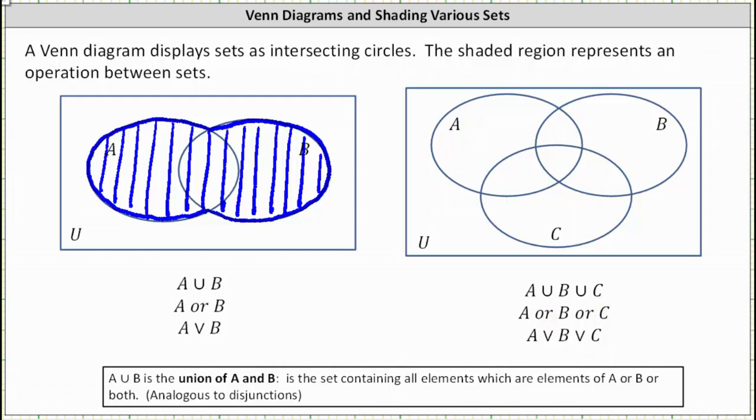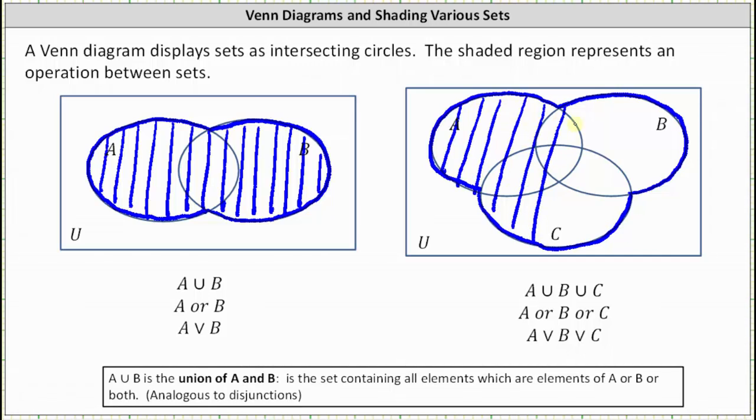The set containing the elements that are in A or in B or in C is this set here. The set contains the elements that are in A or B or C. This is A union B union C.